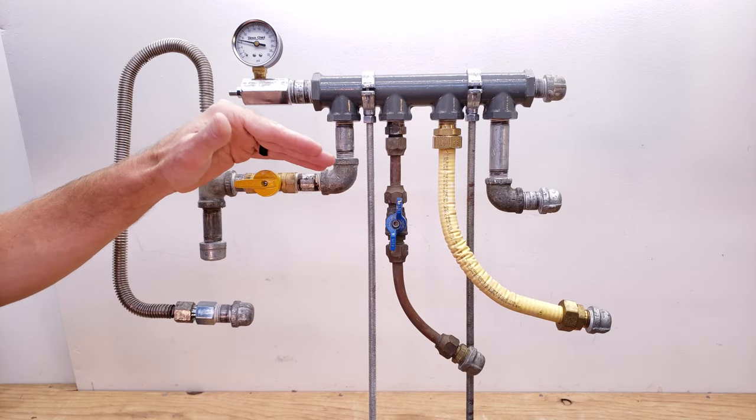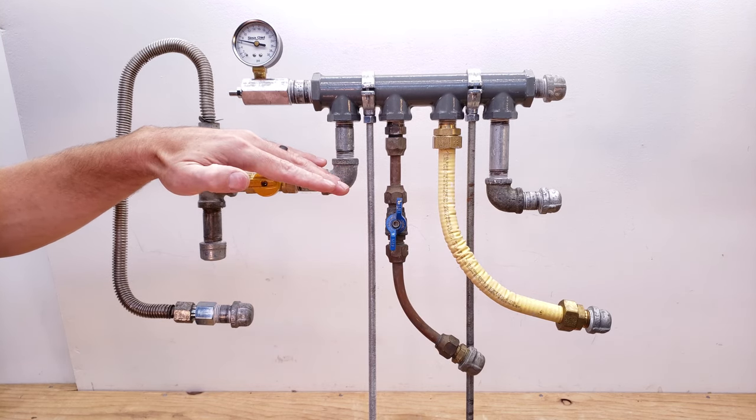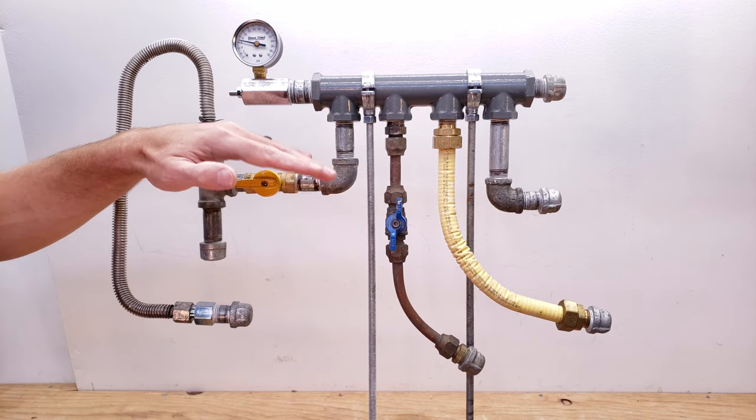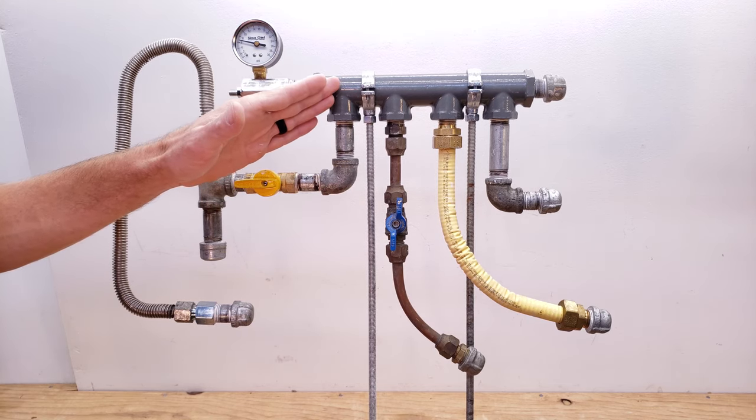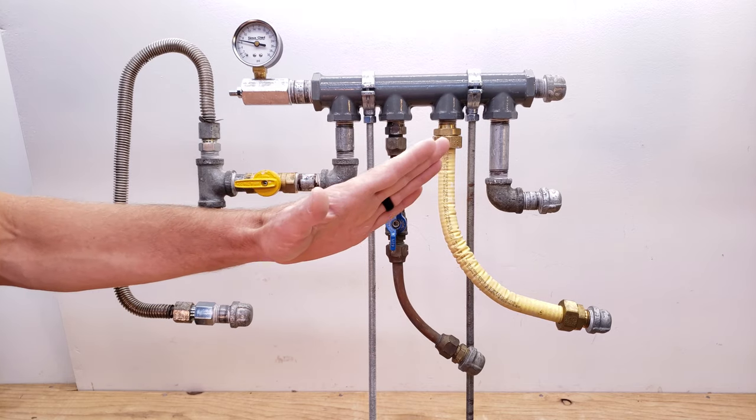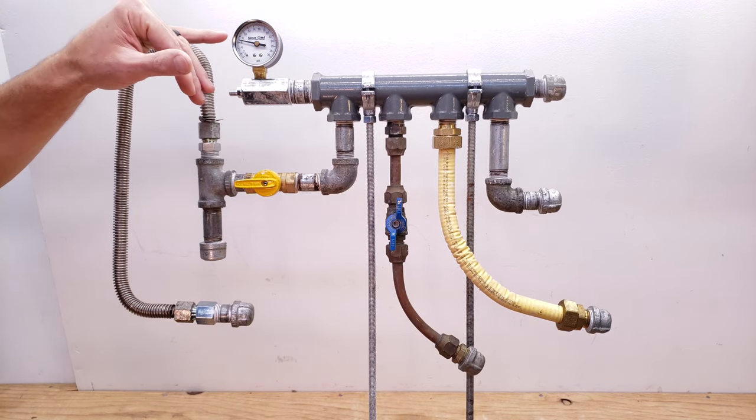Depending on your location you may have galvanized or black iron, but the reality is in the International Fuel Gas Code it does not differentiate between if you can use galvanized or black iron. But anyway, you have a manifold here, and we have several different styles of gas lines attached into here, and we're checking for a leak.